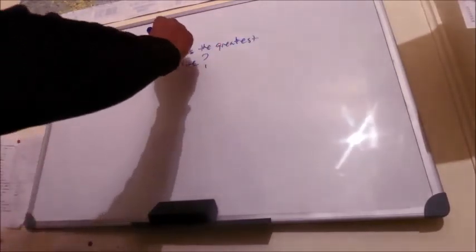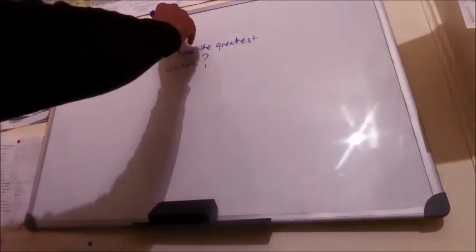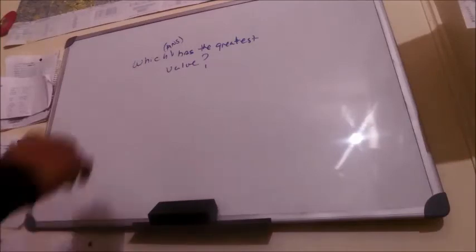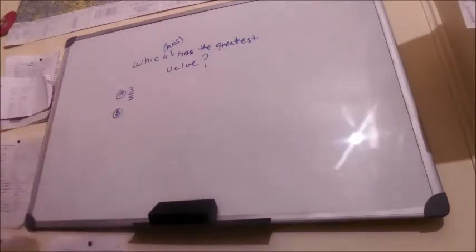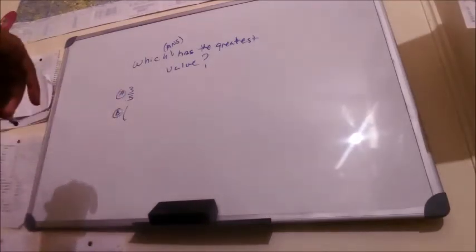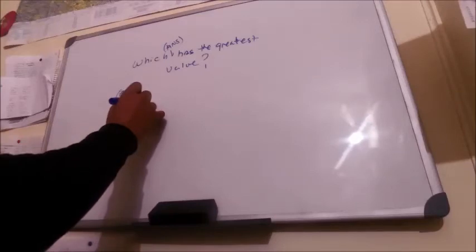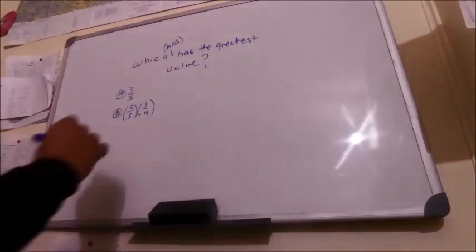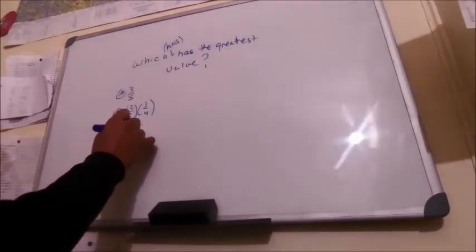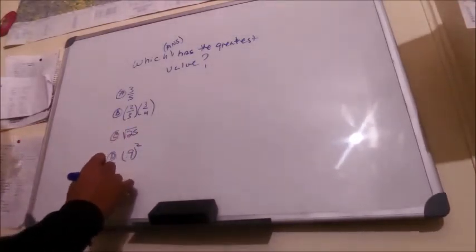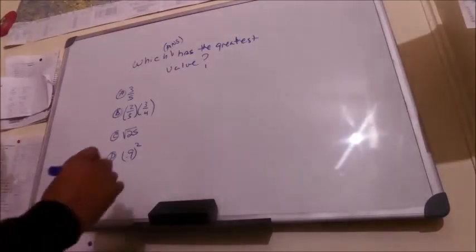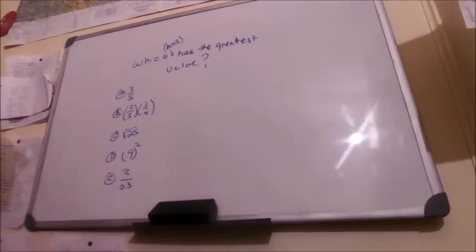Which answer has the greatest value? We have A which is 3/5, we have B which is 2/3 times 3/4, C is the square root of 25, D is 0.9 squared, and E is 2 over 0.3.